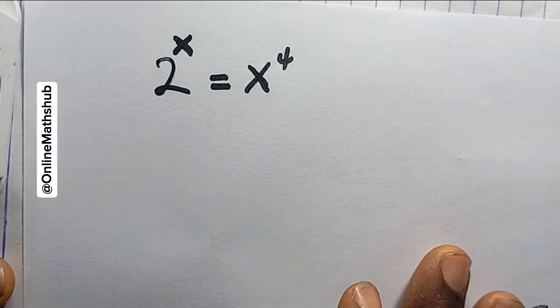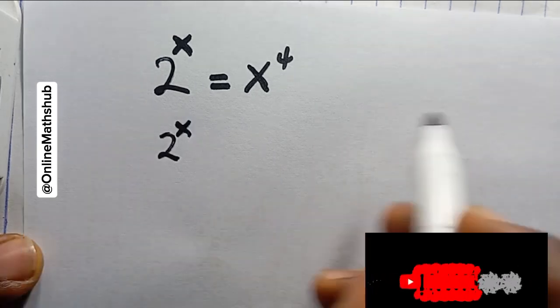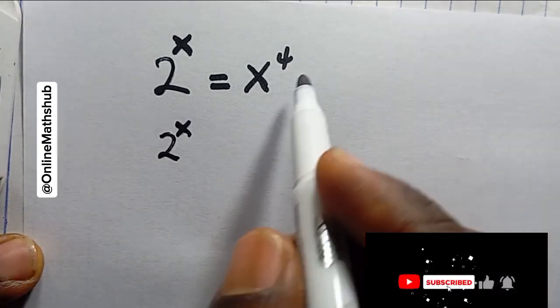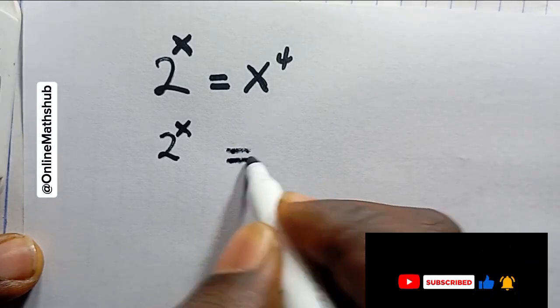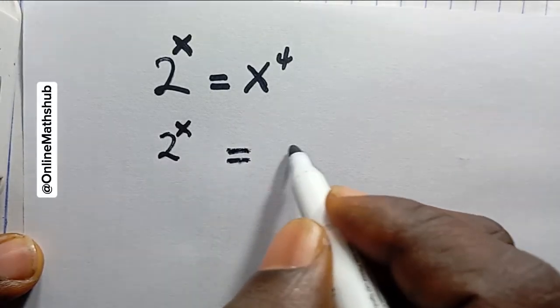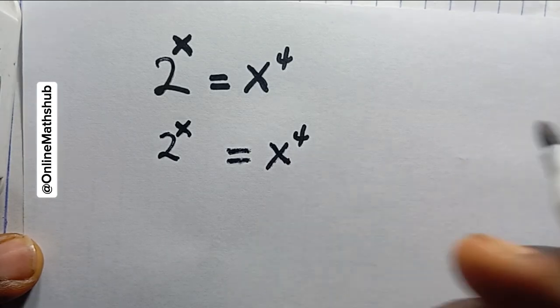You can also use the same methods to solve similar problems. What I'm just going to do is find a way to remove these powers I have right here. I have power x over here and then I have power 4 over here, so how do I remove that?